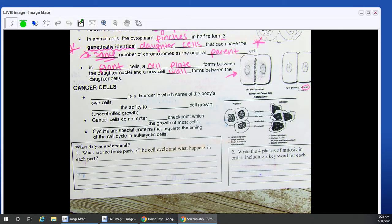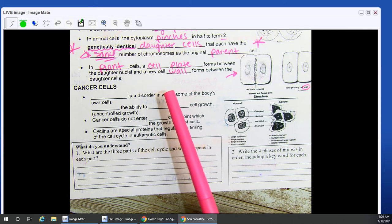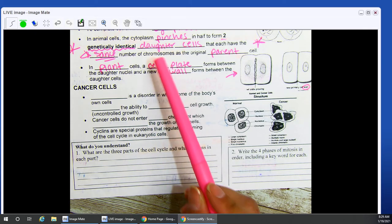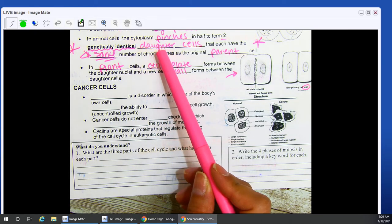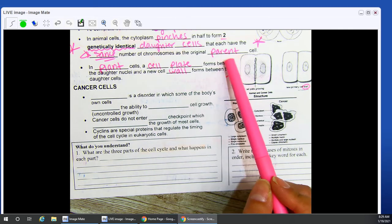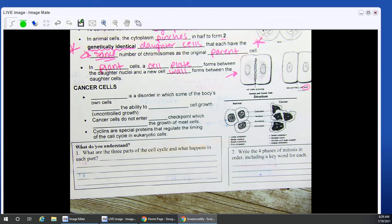So when you're done in mitosis, mitosis will create or end with two identical daughter cells that have the same number of chromosomes as your parent cell.